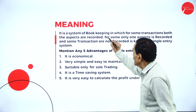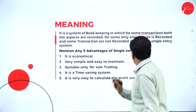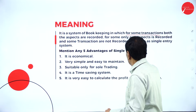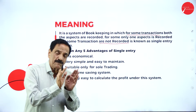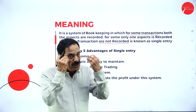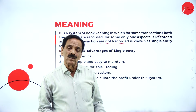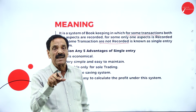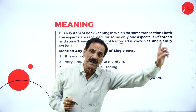Single entry system is a systematic bookkeeping in which for some transactions both aspects are recorded, for some transactions only one aspect is recorded, and for some transactions no aspects are recorded at all. It is known as single entry — also called one-sided entry — which is called the incomplete system of bookkeeping.